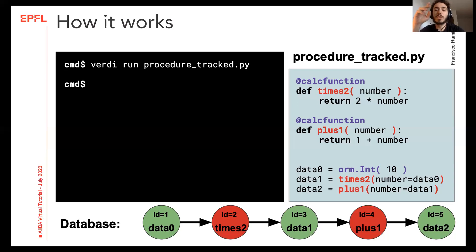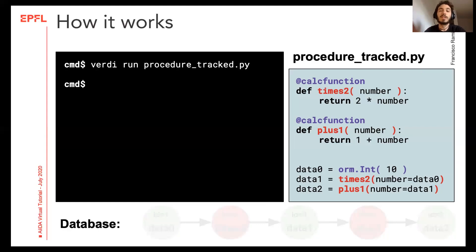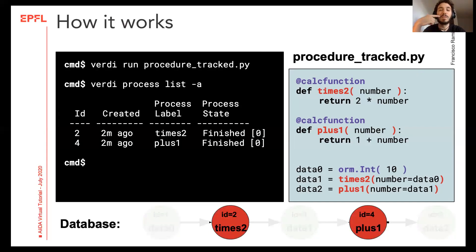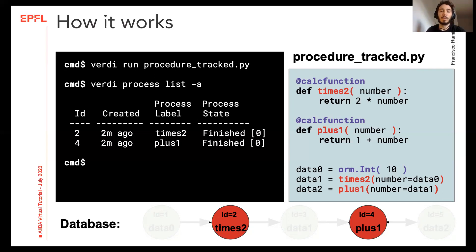The script finishes and our database will have kept the record of all the transformations that turned our initial value inside node data_0 into our final value stored in node data_2. All of these nodes are kept inside AIDA's internal database, so the user does not directly see any of this content. The program provides a series of tools to explore the content of your database — for example, you can ask AIDA to list all the calculations it has recorded by running the Verdi process list command, which exposes information about the two calculation nodes we just ran, showing id numbers, their labels, and their state — which in this case is finished successfully for both of them.